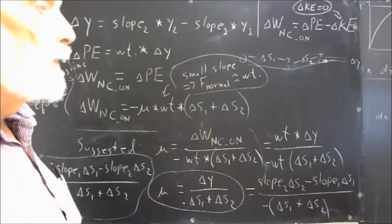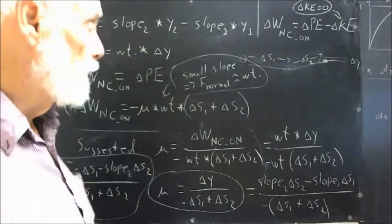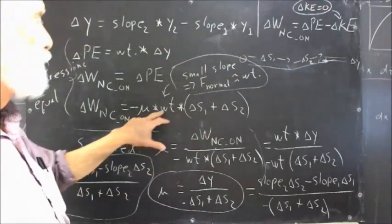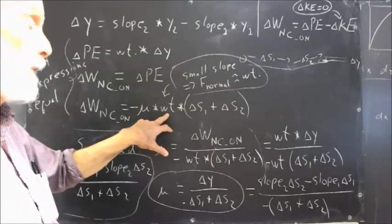So what's the delta WNC_on? Well, it's negative, and you multiply coefficient of friction times the weight.